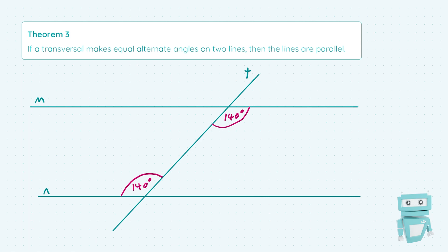So what this theorem also tells us is that in the case we have equal alternate angles like we do here, the two lines which the transversal cuts are parallel. I'm just going to draw these little arrowheads to indicate that m and n are parallel, since we have equal alternate angles.